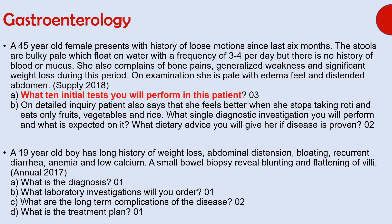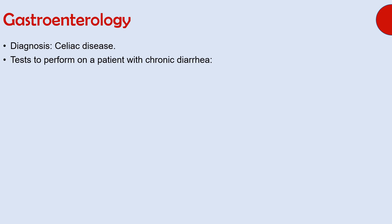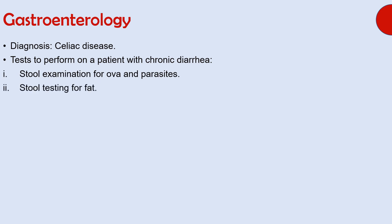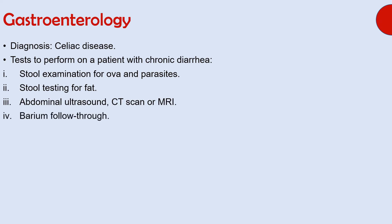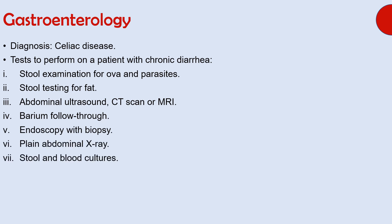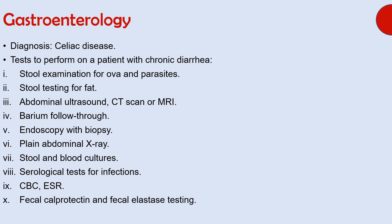One of the questions asked about initial tests to perform in a patient without a known underlying cause of chronic diarrhea. These include stool examination for ova and parasites, stool testing for fat, abdominal ultrasound, CT scan or MRI, barium follow-through, endoscopy with biopsy, plain abdominal X-ray, stool and blood cultures, serological tests for infections, CBC and ESR, and fecal calprotectin and fecal elastase testing.